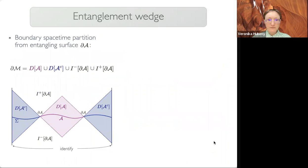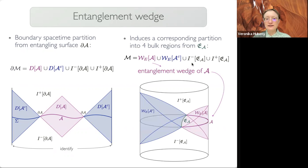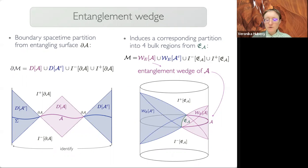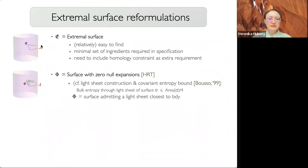To covariantize, one can simply promote the minimal surface at constant time to an extremal surface that is still homologous to the boundary region — this is the HRT prescription. This is well-defined in arbitrary time-dependent asymptotically AdS spacetimes, provided the null energy condition is satisfied. The extremal surface very naturally provides a partitioning of the bulk that defines the entanglement wedge: the entangling surface partitions the boundary spacetime into four regions which precisely correspond to four regions delimited by the extremal surface.